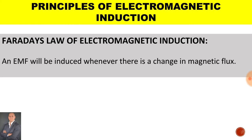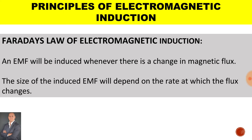Faraday's first law states that an EMF will be induced whenever there is a change in magnetic flux. Faraday's second law states that the size of the induced EMF will depend on the rate at which the flux is cut.